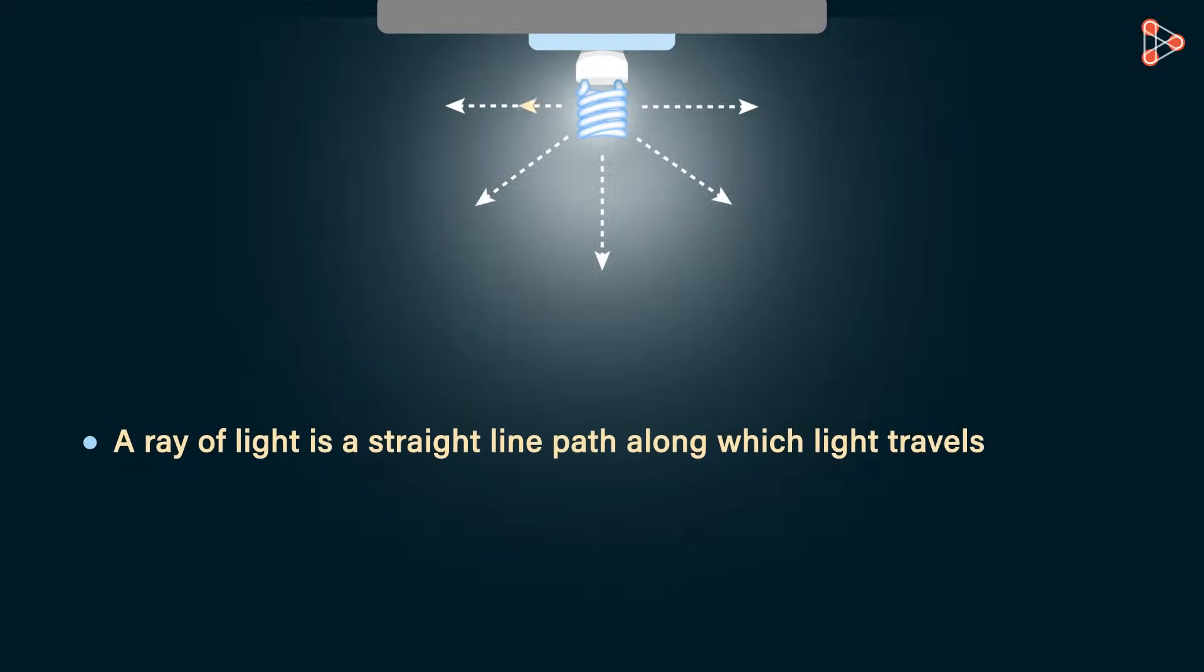Let us denote each direction with a straight line and an arrow on it pointing in the direction where the light is traveling. So all these arrows represent various paths along which light is traveling. These arrows are what we call rays of light. Here's how we define a ray of light: A ray of light is a straight line path along which light travels.